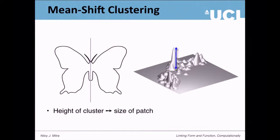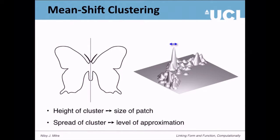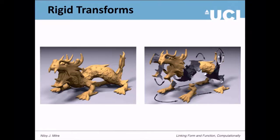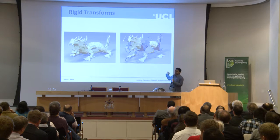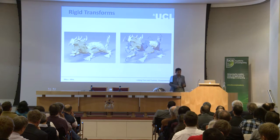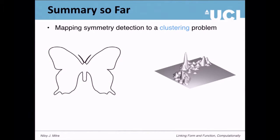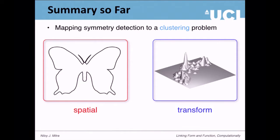To summarize: we've mapped the height of clusters to the size or extent of symmetry, and the spread of clusters to the level of approximation. There's inherent ambiguity between level of symmetry and noise in the data. You can do this with rigid transforms and extract these abstractions — these black arrows representing relations between parts of the point cloud of around two million points. The bigger insight is we've mapped symmetry detection to a clustering problem, which is a local problem we have good handles on.